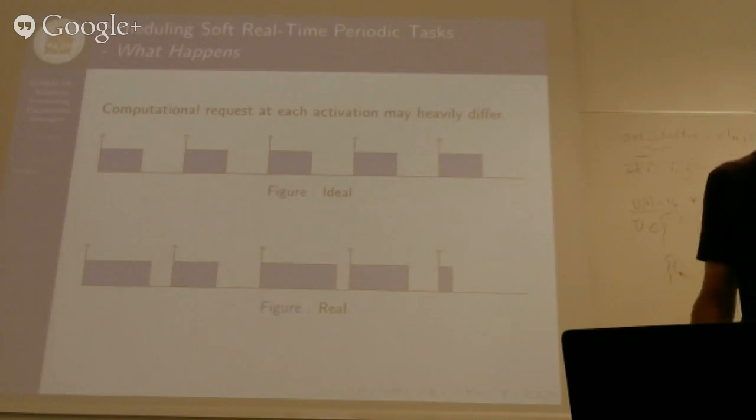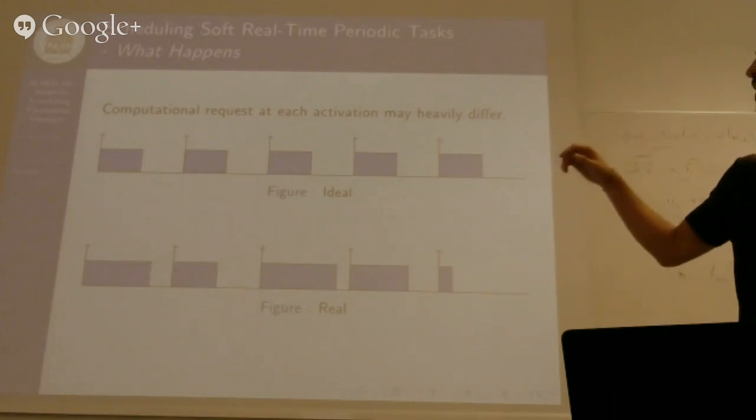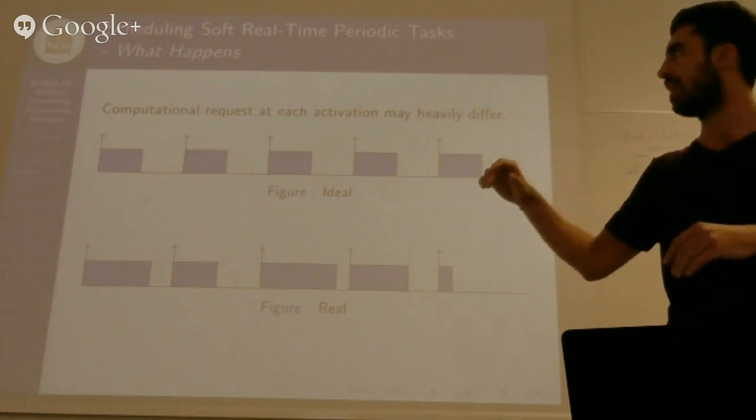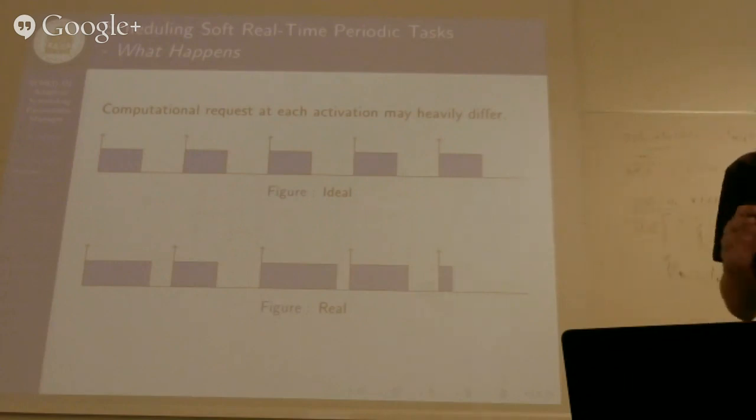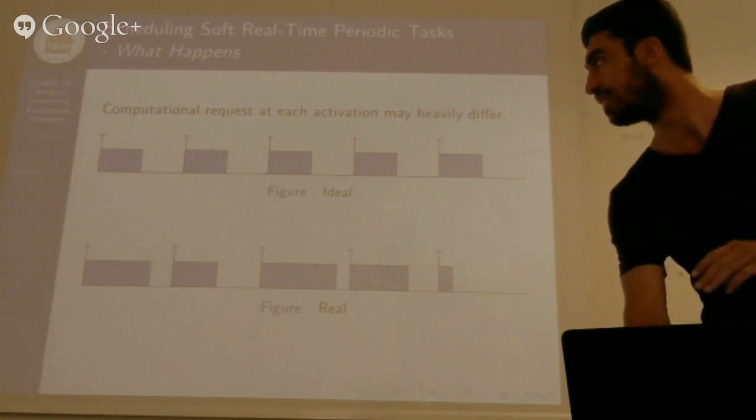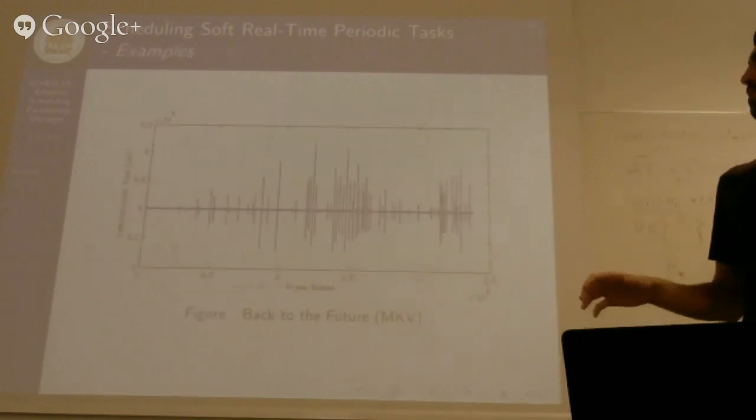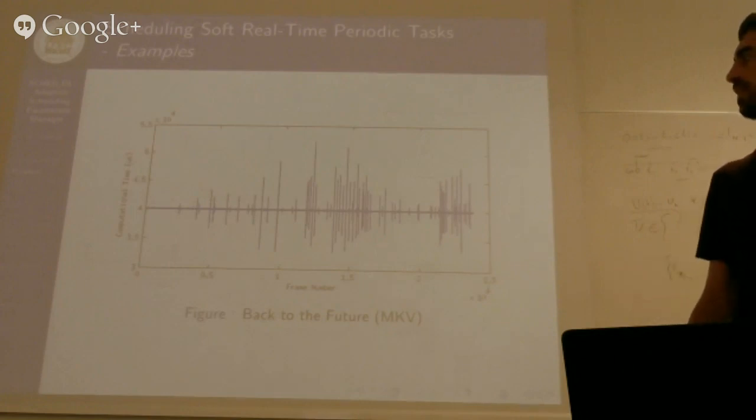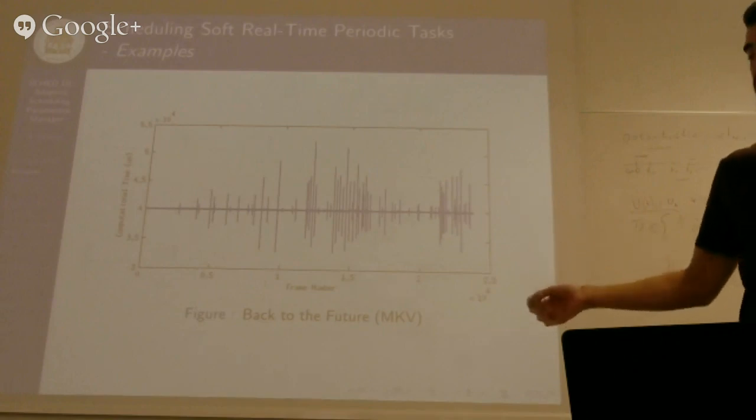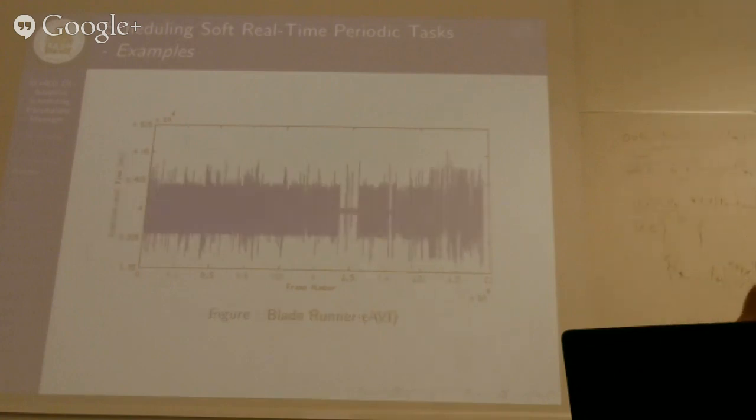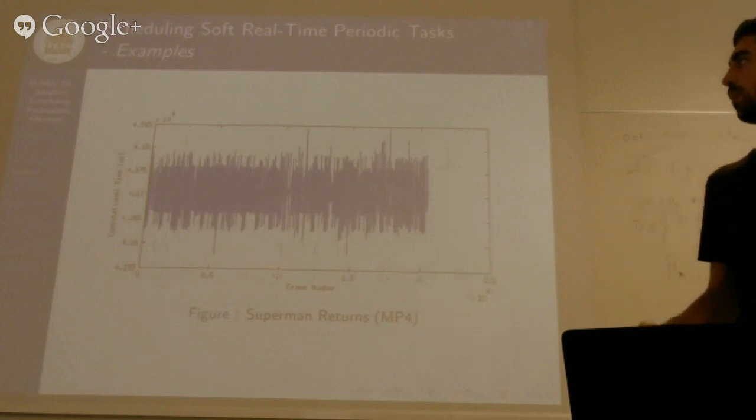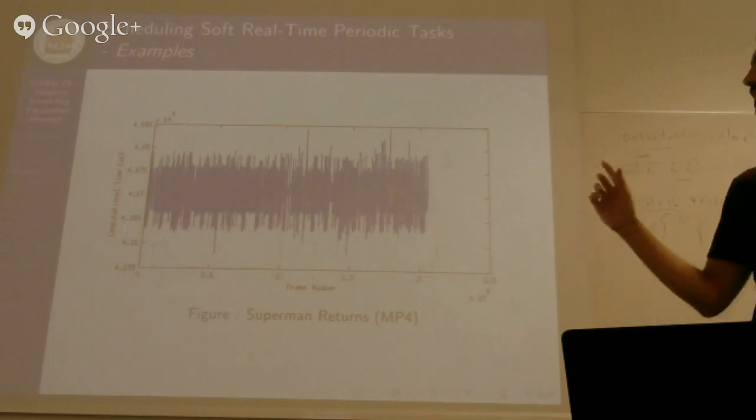So what we have in a soft real-time application is what we want is to have an ideal situation, like in the first picture, where we have a periodic task, of course, but where the computational times required in the world is always constant. But in the real world, we have some jitter between the several jobs. So to provide you the proof of this concept, I performed some measurements on different movies with different codecs. So for instance, here we have an MKV, a Matryoshka codec. Here we have an AVI example, and here an MPEG-4 example. So we can see that there is a lot of jitter between the different activations.